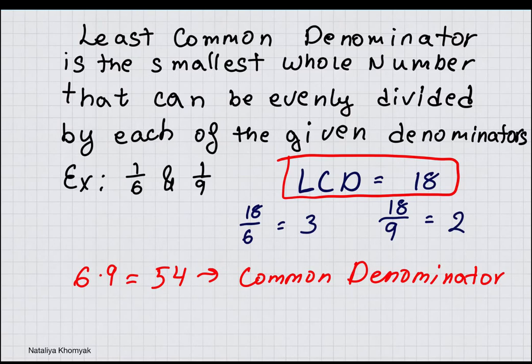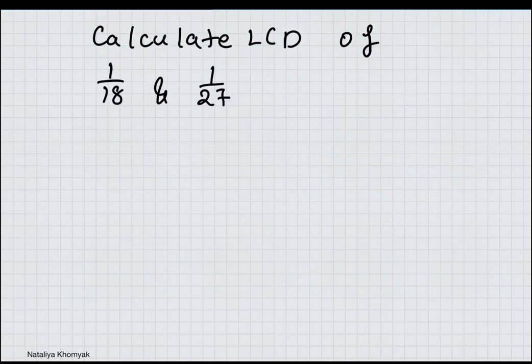54 is a common multiple of 6 and 9 and can be divided by 6 and 9 at the same time, but it's not the smallest number. Let's find Least Common Denominator of 18 and 27 by division.